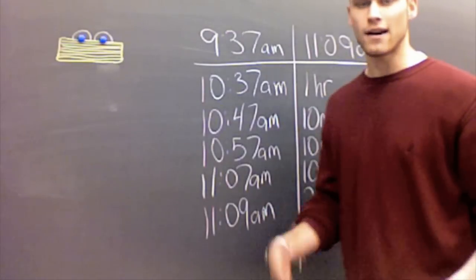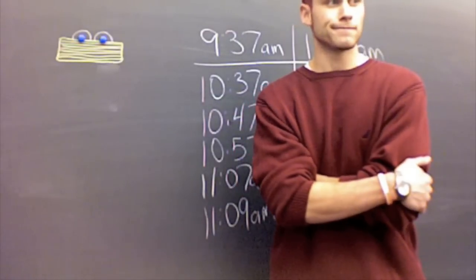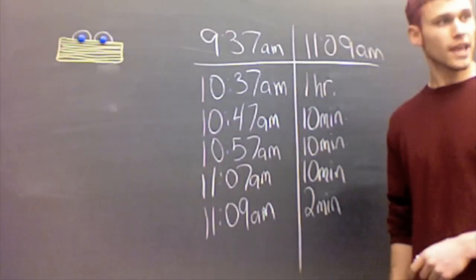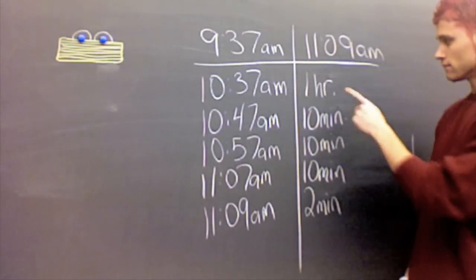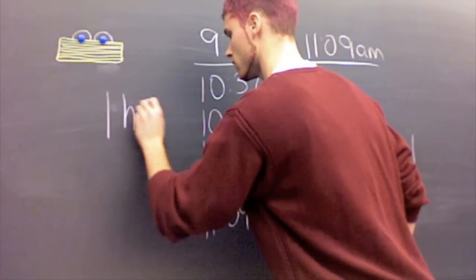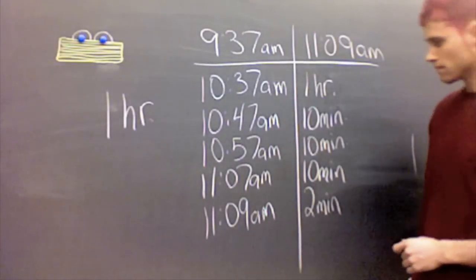Now, to figure out how much time you were on my computer, all I have to do is add up this column right over here. Can I do that? Yeah, go ahead. Alright. You have one hour, so it's one hour, and then you have 30 minutes, because 3 times 10 is 30, plus 2, 32 minutes. 10, 20, 30, plus 2, 32.